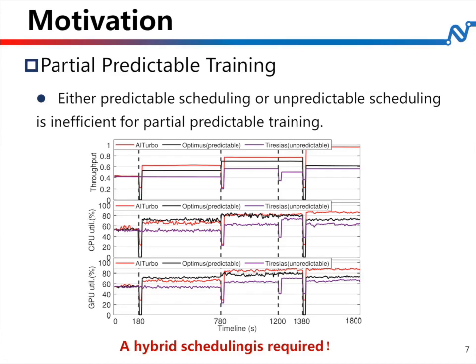Prior resource scheduling approaches are compromised by partial predictable training. Predictable approaches, like Optimus, make poor decisions when performance prediction error is high. Whereas unpredictable ones, like Tiresias, may miss the optimal schedule without knowing the completion time. Our AI Turbo can distinguish the predictability of jobs and schedule them differently, improving both system throughput and resource utilization.